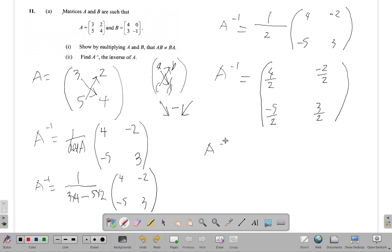So we can simplify down and see what happens. Four halves is going to be two. Two into two, one. Two into four, two. So it's going to be two. Negative two halves, obviously it's negative one. Negative five halves, that still remains because we can't really cancel anything. Same thing with three over two, three halves. So that's it, A inverse.